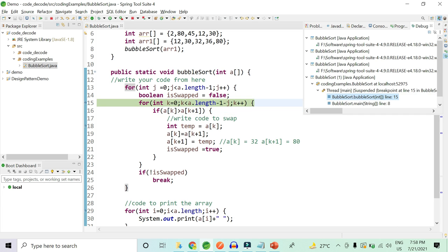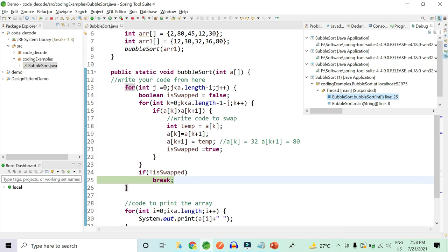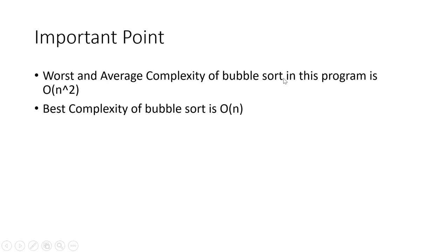Debugging the optimized code confirms that in the first iteration it runs as before, but at the start of the second iteration it checks whether isSwapped is false — it is, so the break executes and the code stops. This is a much more optimized solution. Regarding time complexity: the worst and average case complexity of bubble sort is O(n²) because we use two for loops. The best case complexity is O(n), which occurs when the array is already sorted and we use the isSwapped optimization.